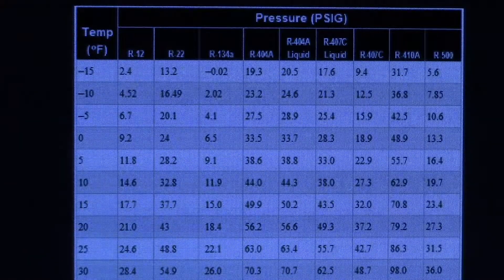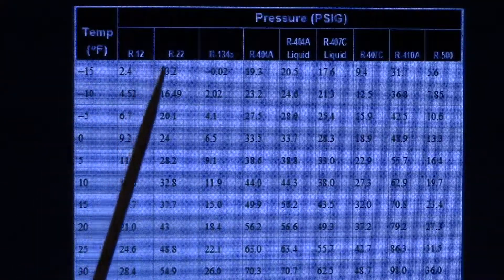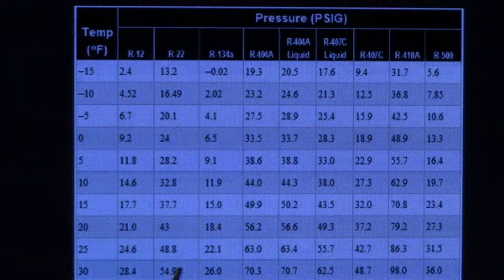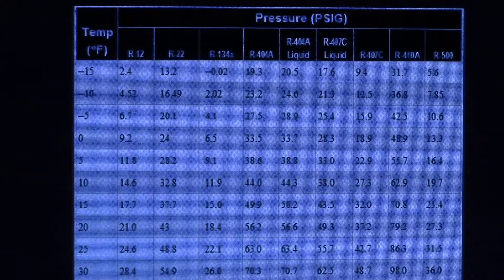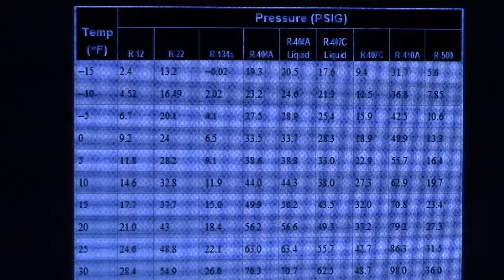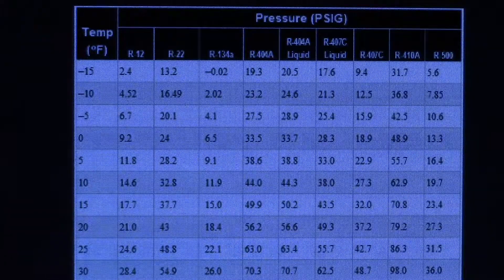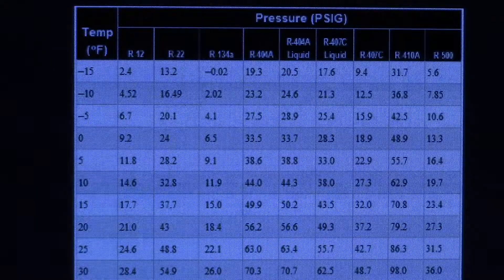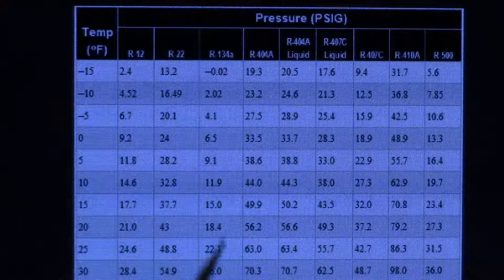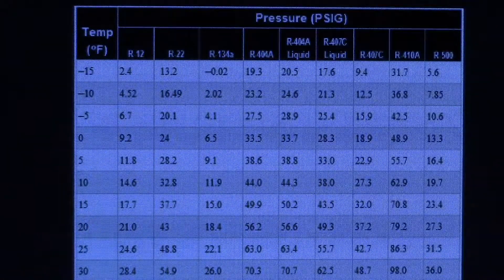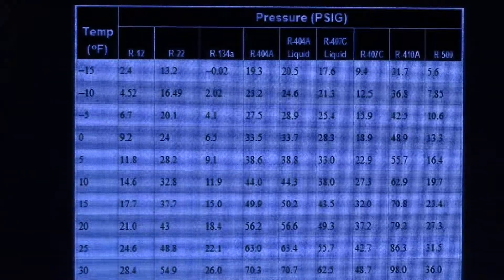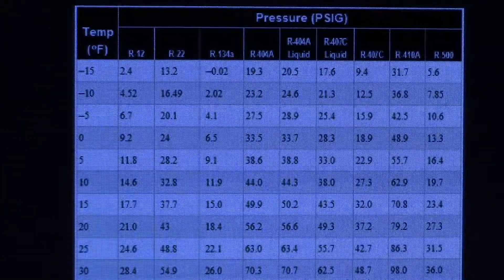Let's look at this one here — R22. Let's say we go down here to 68.5 psig. That means with this chart, R22 would be 40 degrees. If it was the other way where pressure was here and temperature was there, you'd follow pressure here to temperature there. So always start in that corner.